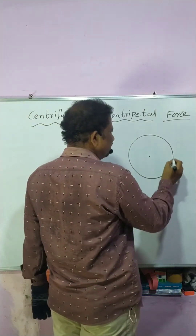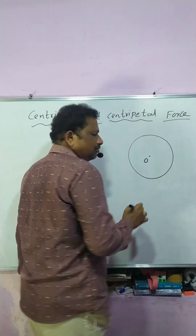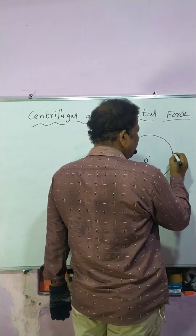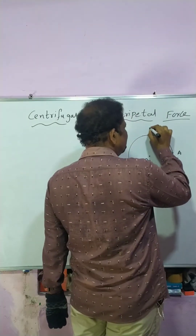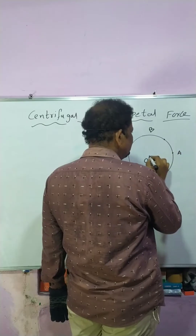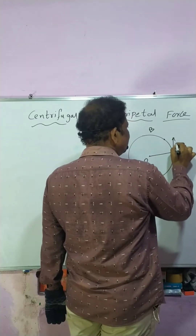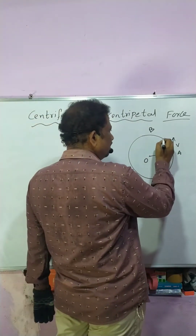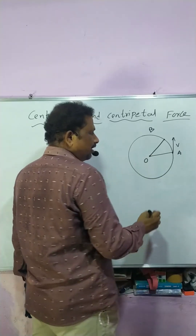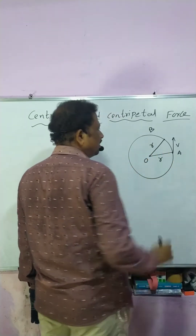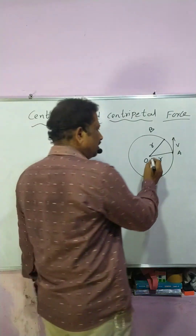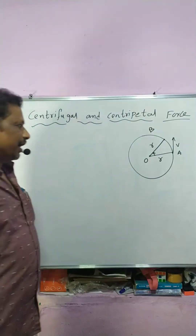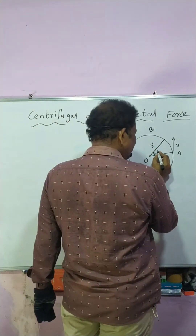Suppose a body is moving in a circle whose centre is O. The body moves from A to B — it displaces from A to B with velocity V at point A. The radius of the circular path is R.